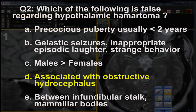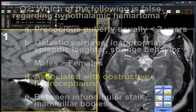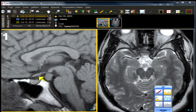Question two: which of the following is false regarding hypothalamic hamartoma? These lesions can be decent-sized but usually two centimeters or less — and they are not associated with obstructive hydrocephalus. That is the false answer. The other choices are true: patients have precocious puberty; gelastic seizures and inappropriate spontaneous laughter are associated features; males are more commonly affected; and the location is between the infundibular stalk and the mammillary body.